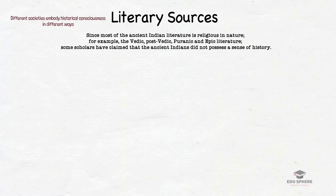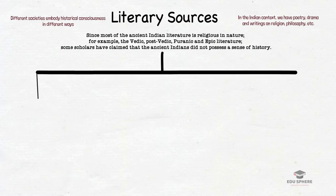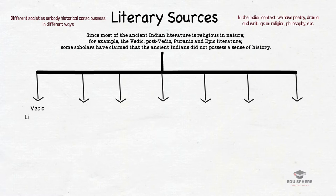However, recent research into historical traditions has made it clear that different societies embody historical consciousness in different ways. In the Indian context, for example, we have poetry, drama, writings on religion, philosophy, linguistics, mathematics and many other topics. So let us have a look at these different categories of ancient Indian literature. In this video, you can find a bird's eye view of all the facts; the topics in detail will be covered in upcoming videos.